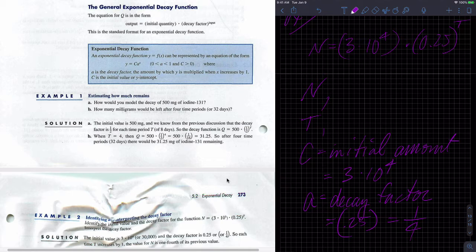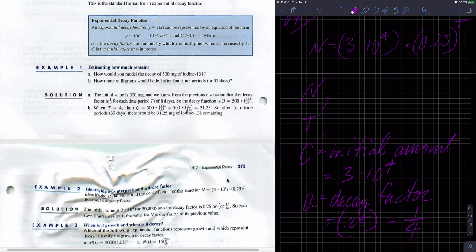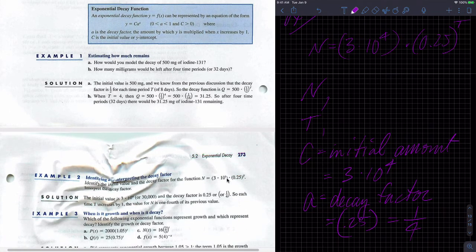So for each T, for each T, whatever T is, we're going to keep 25% of our previous amount.